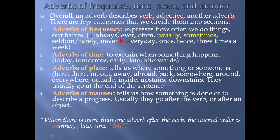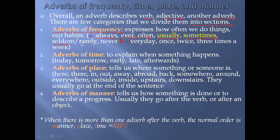There are a few categories that we divide adverbs into sections. The first one is adverbs of frequency. Frequency means we talk about how often things or habits happen — how often we do that thing. Those frequency adverbs include: always, ever, often, usually, sometimes, seldom, rarely, and never.